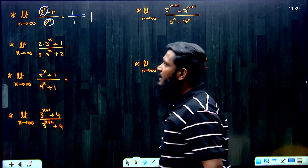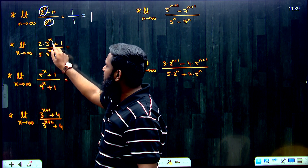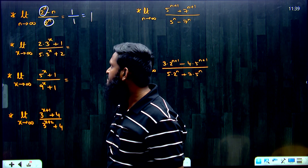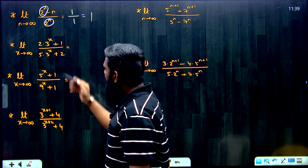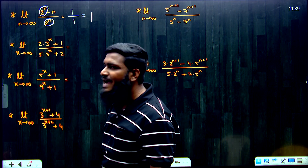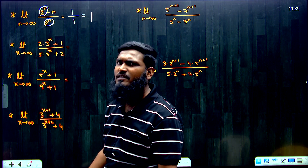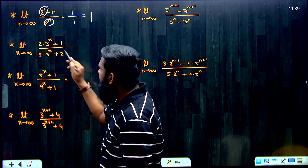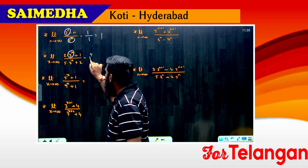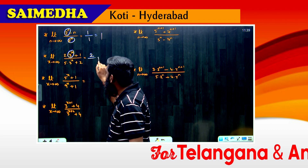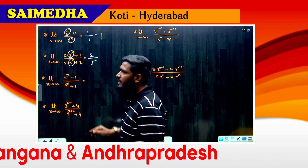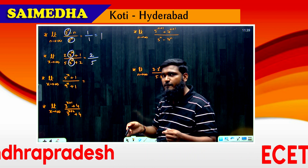Next question: limit x tends to infinity of (2·3^x + 1) / (5·3^x + 2). From this complete question, what is the highest base term? Only one — 3^x. What is the coefficient of 3^x in the numerator? 2. What is the coefficient of 3^x in the denominator? 5. What is the answer? 2 by 5.